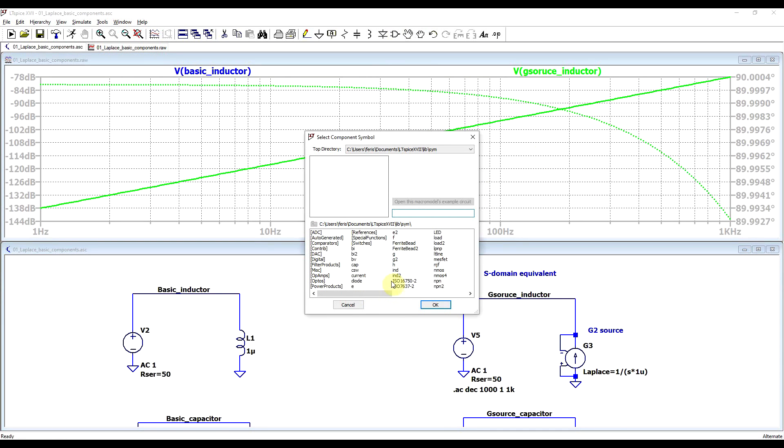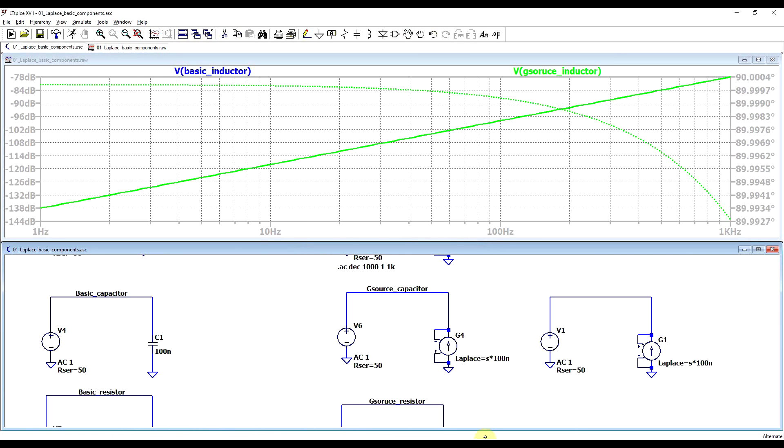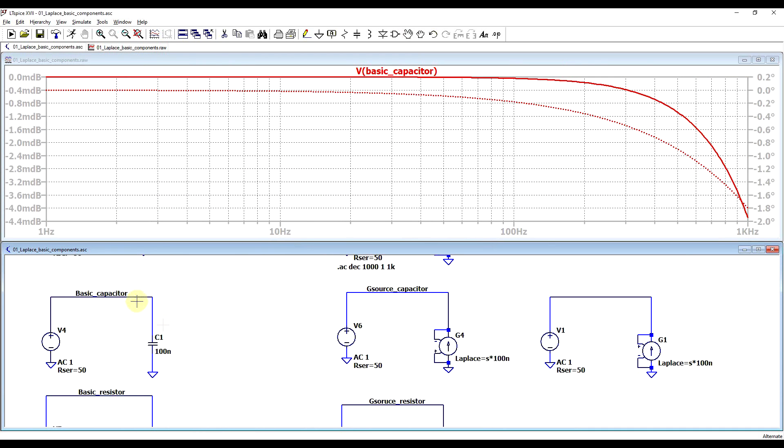One thing to mention is that LTSpice offers two types of G sources. You have the G and the G2, and the difference being which is the positive and which is the negative input terminal, in reference to the current. So, these are swapped around based on which source you are selecting. In my case, I used the G2 type of source just to have the positive current input pin, on the same side as the positive voltage input pin. In case you get this wrong, you will see an inverted phase behavior between the basic component and the G source equivalent.